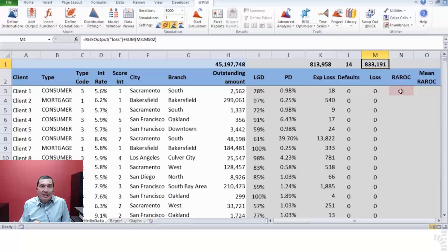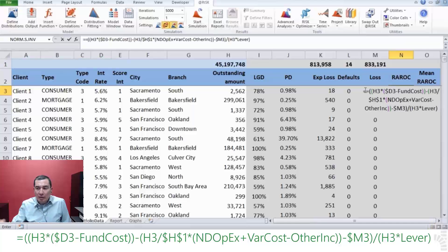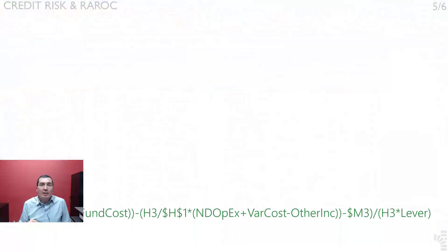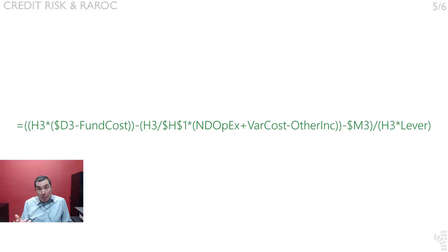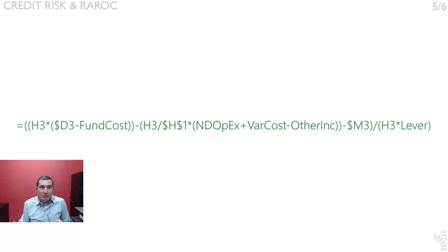Step 23. On cell N3, insert the following formula that individually calculates for each loan its RAROC: equals open parenthesis H3 times open parenthesis $D3 minus fundacost close parenthesis, minus open parenthesis H3 divided by $H$1 times open parenthesis NDOPX plus varcost minus other income close parenthesis, minus $M3 close parenthesis, divided by open parenthesis H3 times lever close parenthesis.